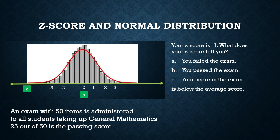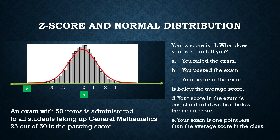What we can say is: your score is below the average score — yes, that is true. More precisely, your score is one standard deviation below the mean score. We cannot tell your actual score or how many points you are below the mean, but we are sure that whatever the average score is, your score is one standard deviation below it.